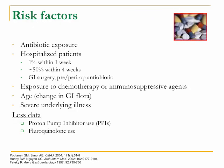Risk factors include anyone exposed to antibiotics — even a single pre-op prophylactic dose. Hospitalized patients face a 1% risk within one week but up to 50% within four weeks. GI surgery, chemotherapy, immunosuppressive agents, advanced age due to changes in colonic flora, and severe underlying illness are all risk factors. Proton pump inhibitor use was discussed heavily in the early-to-mid 2000s as a risk factor, though that evidence has weakened.